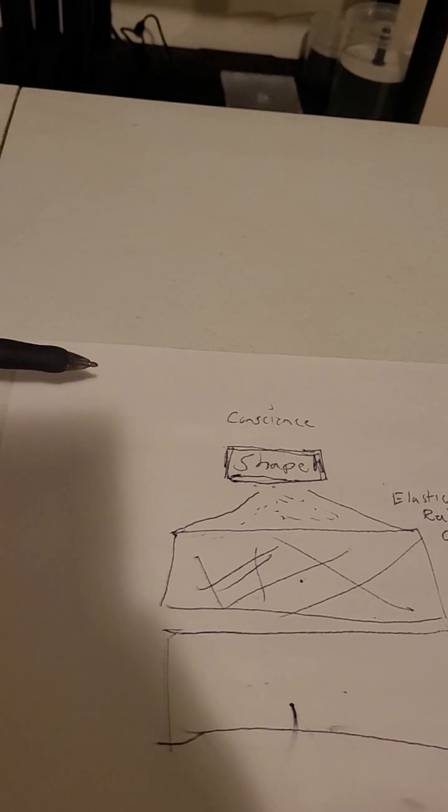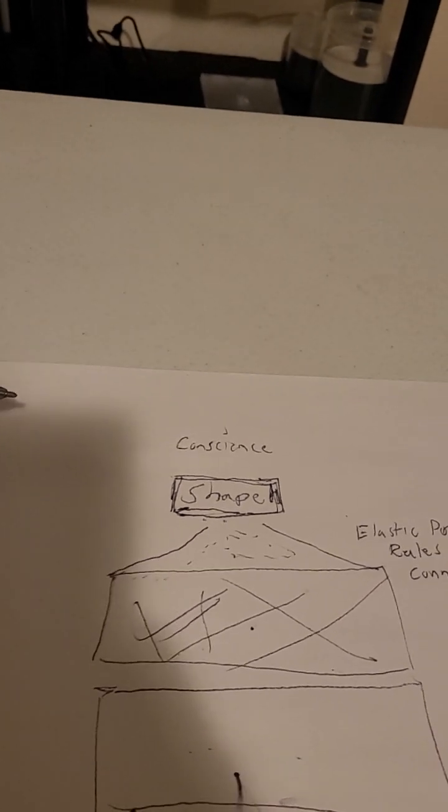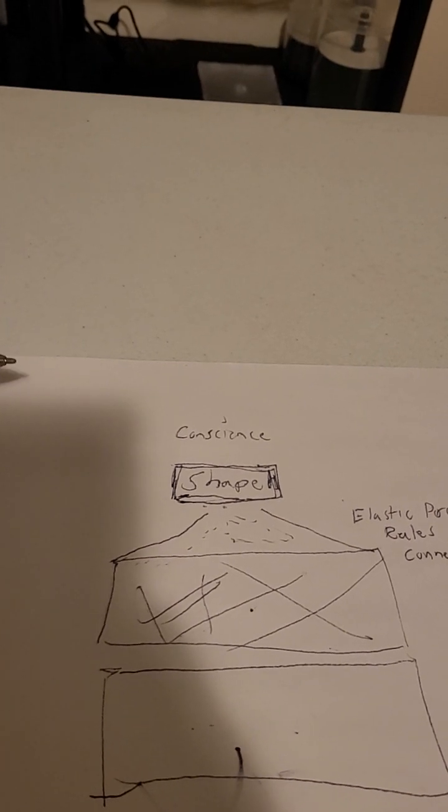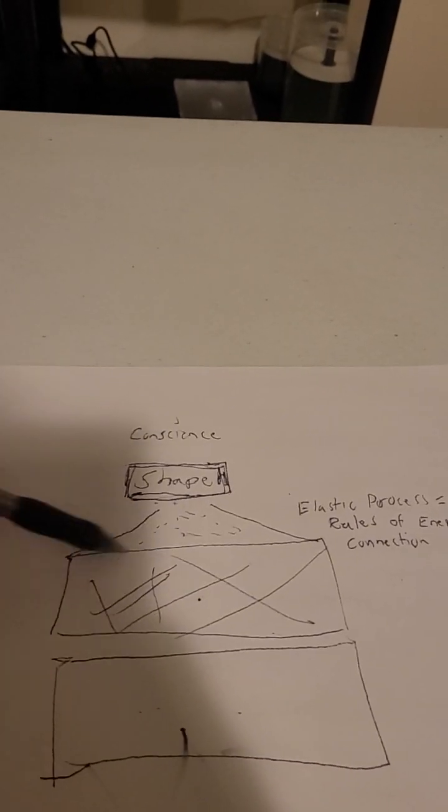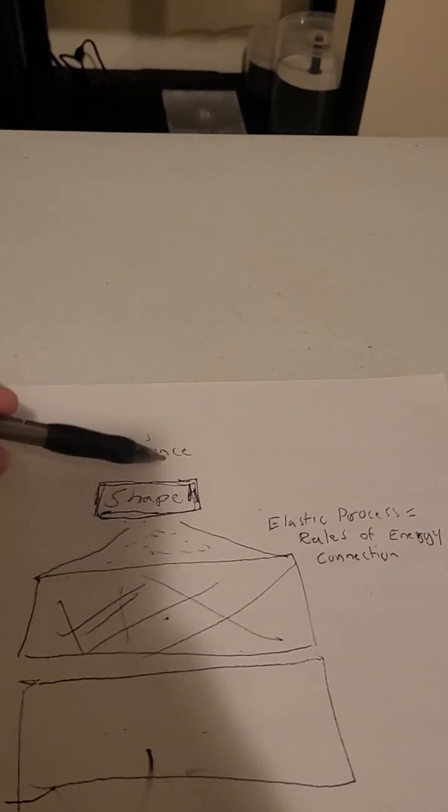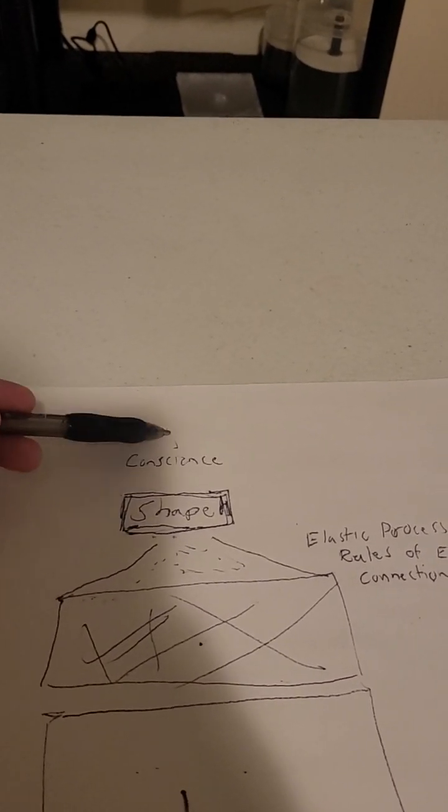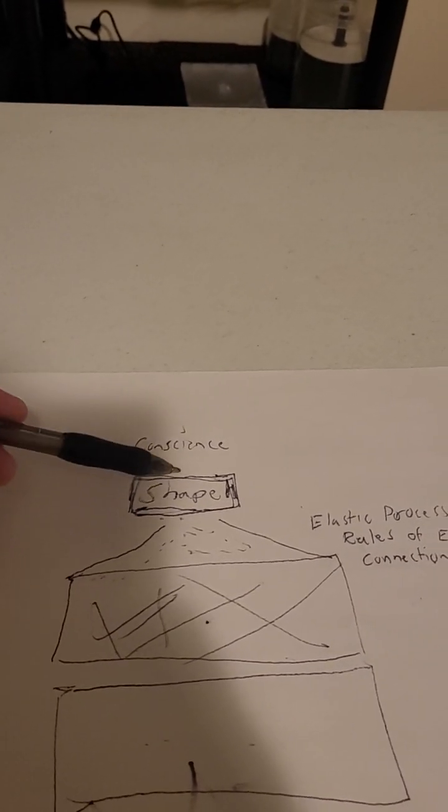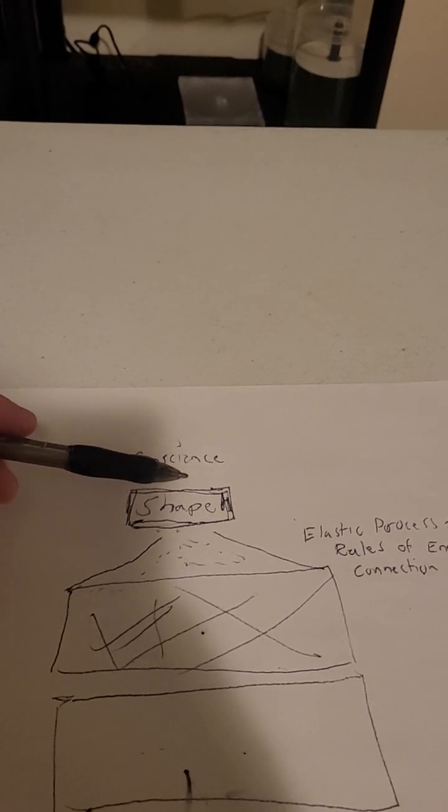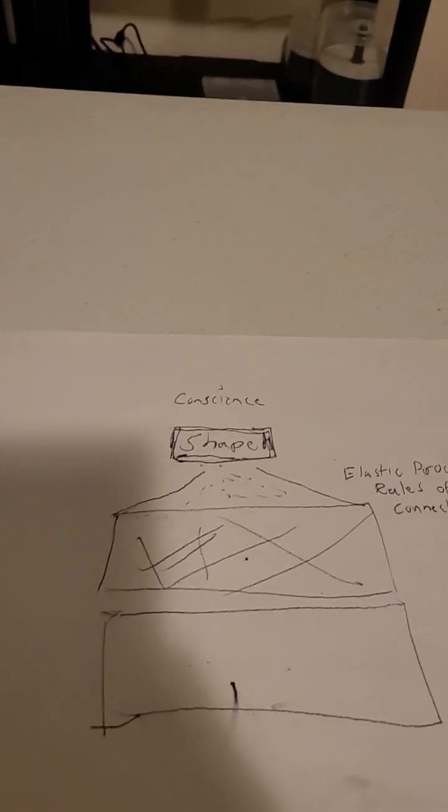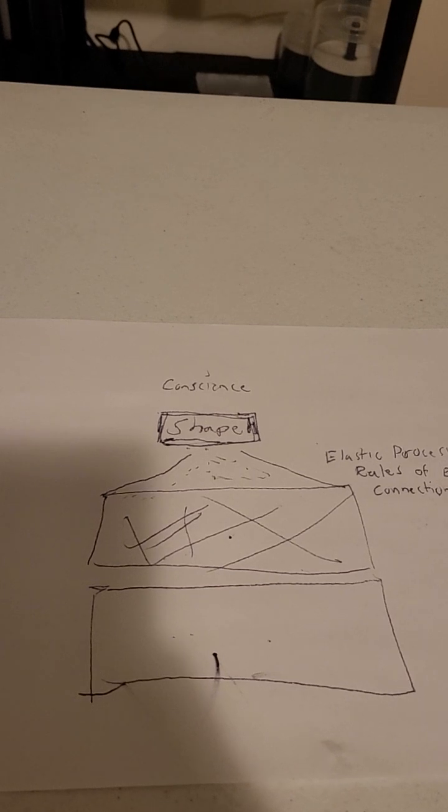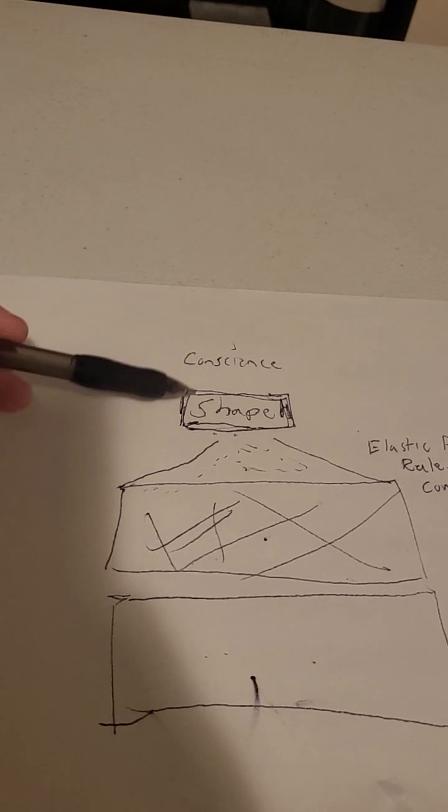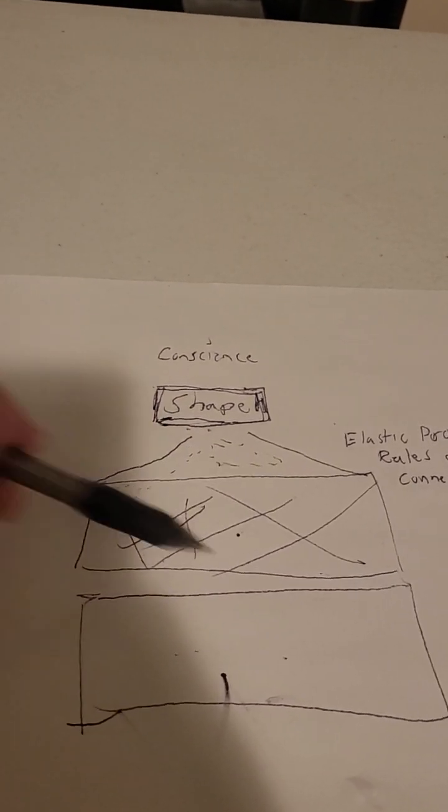With the subtle natural division of nothing, we end up with everything. But everything is still not a shape. So when we have everything, and then we have an arch point of consciousness or conscience, then we have to have rules. And the rules are because there's an ecosystem to reality.